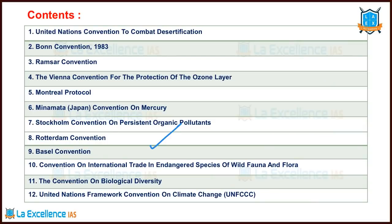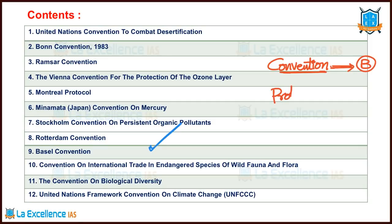These are the 12 important conventions that we are going to discuss today. Before that, let me clarify a few words. First one: convention. What is the meaning of convention? All the member countries meet and agree for broader guidelines. And then there are certain words called protocol. Protocol means after coming to a particular understanding under a convention, how to implement them — there should be some specific guidelines.